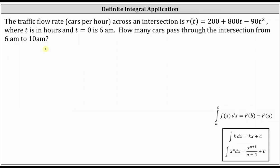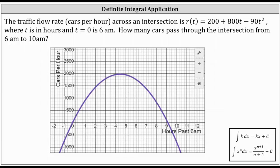To better understand this question, let's look at the graph of the flow rate function r(t) on the coordinate plane. So r(t) is graphed here in purple. Along the horizontal axis, we have the number of hours past 6 a.m. Along the vertical axis, we have the flow rate in cars per hour.